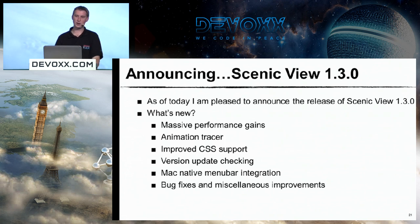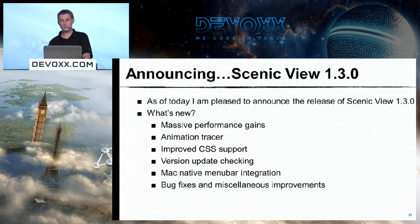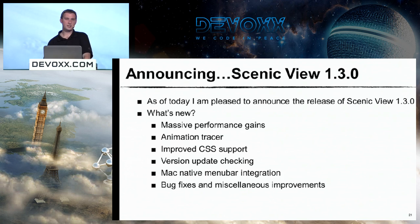Today, just as we announced 1.2 at JavaOne, 1.3 is out and it's quite a big release. The main thing for me was we tracked down a huge number of performance problems and plugged a lot of gaps — it's a lot faster now. It used to be quite slow, especially when scrolling a table view. It also has a new concept of an animation tracer, which shows you all the animations in your application and lets you stop and pause them in real time — very useful if something's going wrong with an animation. It has a lot better CSS support so you can browse the state of all the CSS in your application, plus version checking, Mac menu bar integration, and a whole bunch of bug fixes.